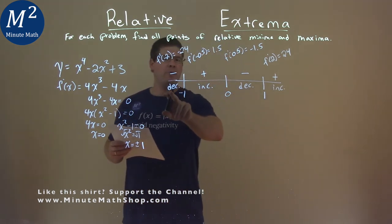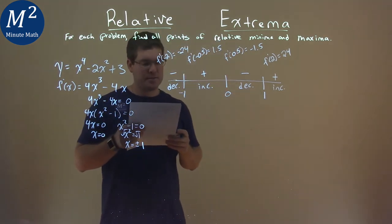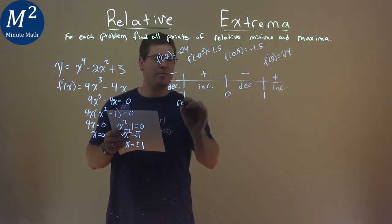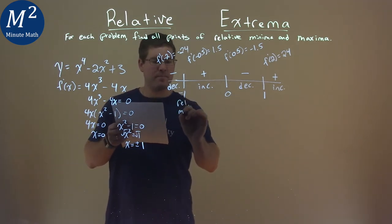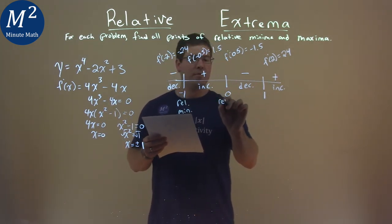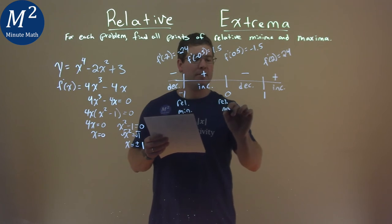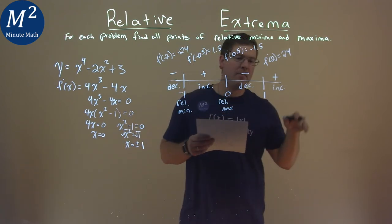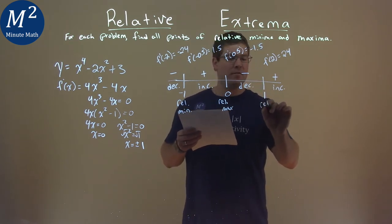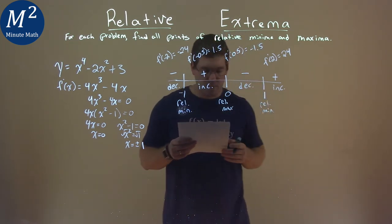So we're going now from a decreasing to an increasing value, that means we have decreasing to then increasing, a relative minimum. If we're going from increasing to decreasing, we have a relative max going on there, and then if we're going from decreasing again to increasing, we have a relative minimum going on there.